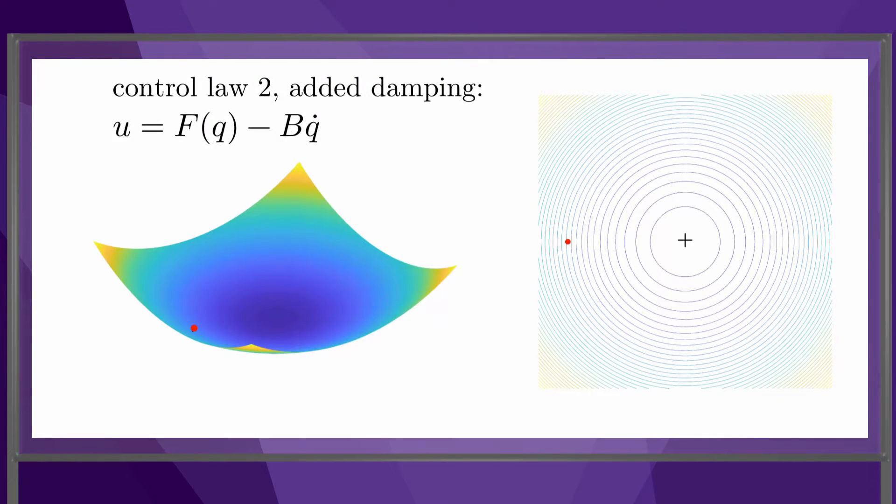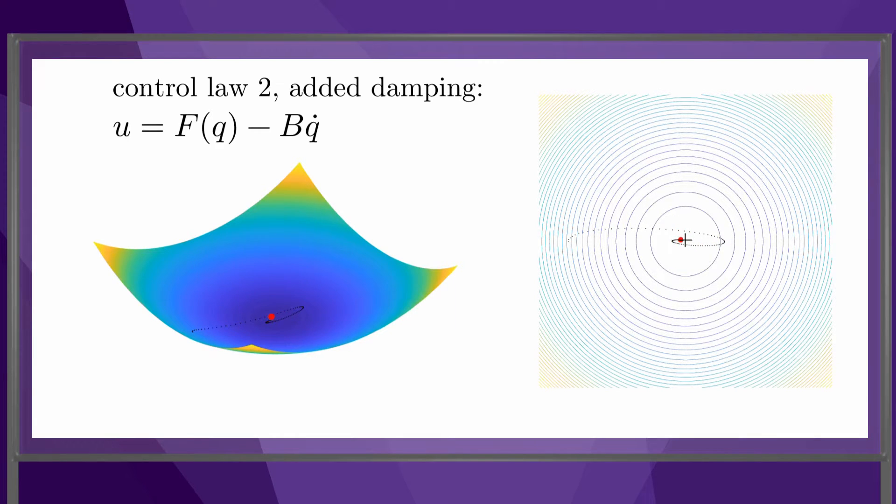To fix this, we can add damping to the control law, where B is a positive definite matrix. This damping subtracts energy from the robot, allowing it to settle at the goal configuration.